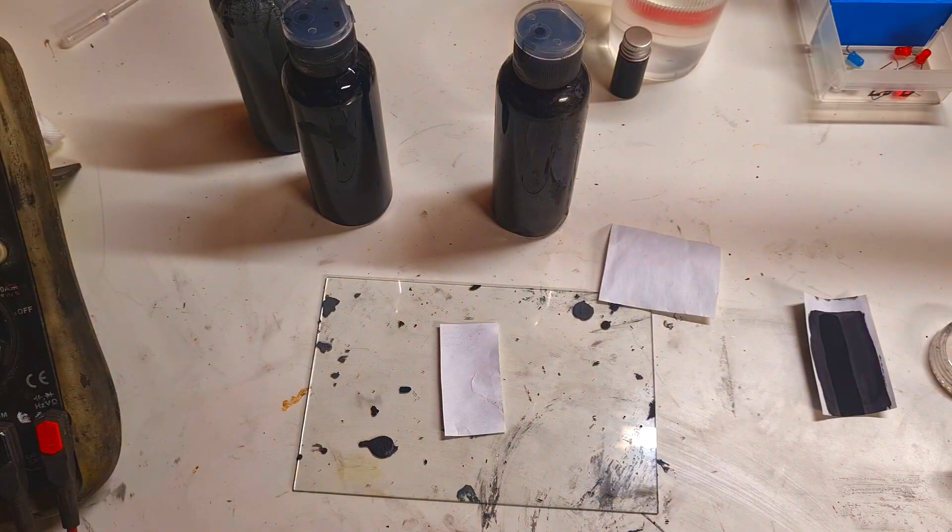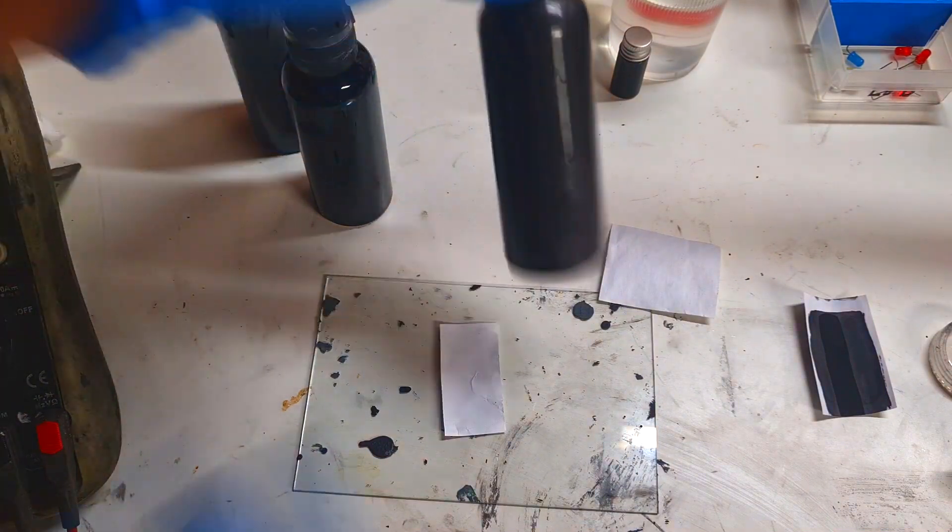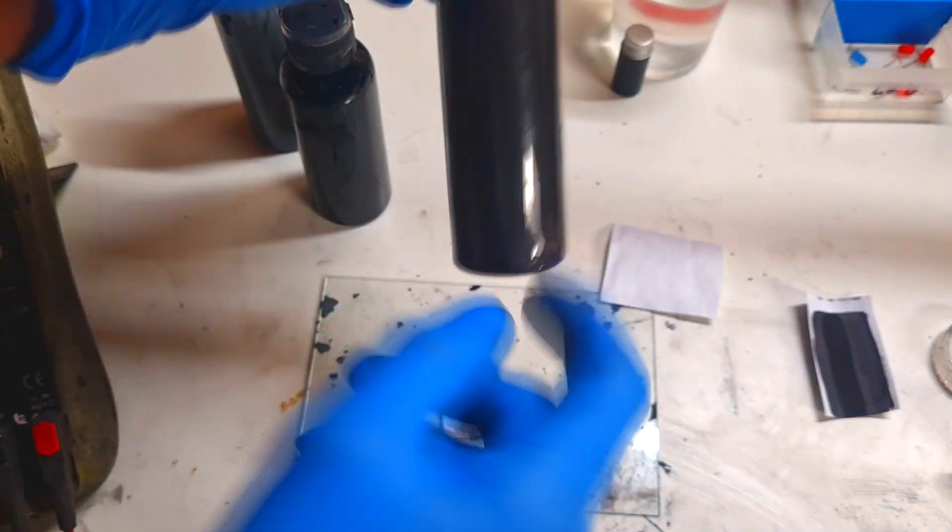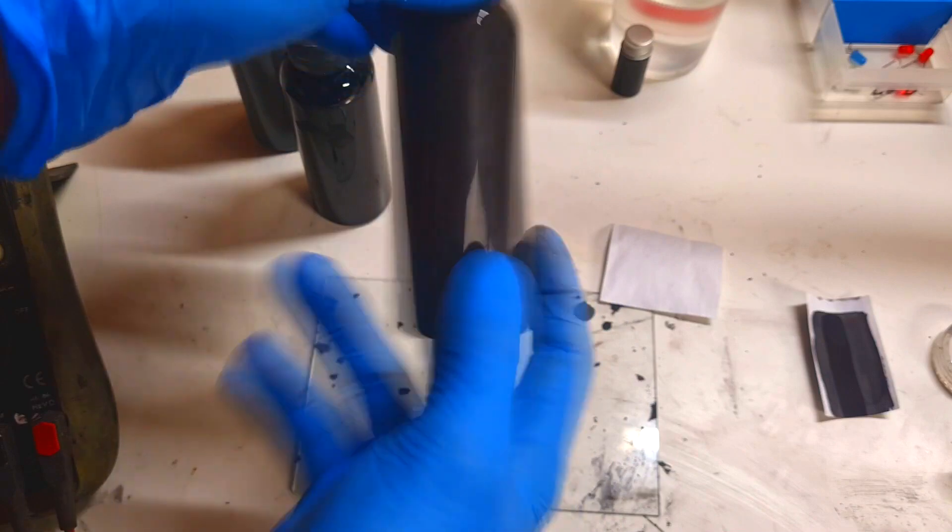Then you need some cathode ink. The cathode ink is made from fine graphite powder, ethanol, and in my case I use some PVB for the binder.